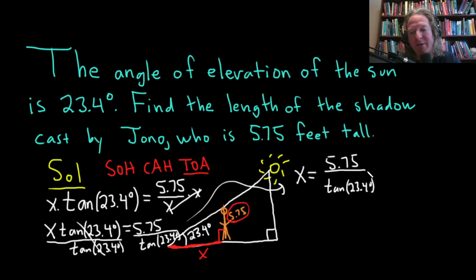I got 13.28746601. I don't know if you can see that, so I'll write it down. X is approximately equal to, I'll round to one decimal place, 13.3.